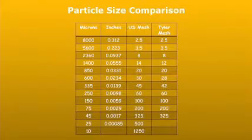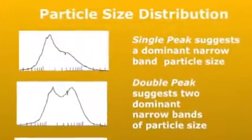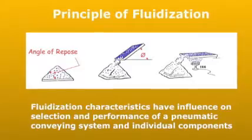Key physical material characteristics and how they influence the selection and operation of a pneumatic conveying system are explored.